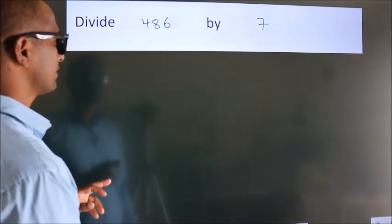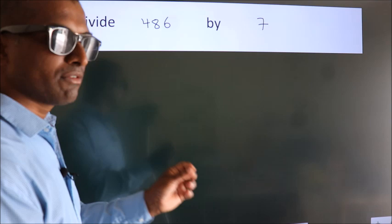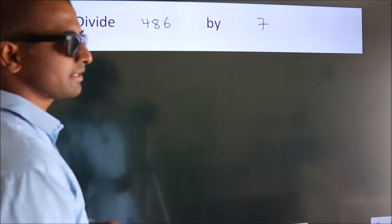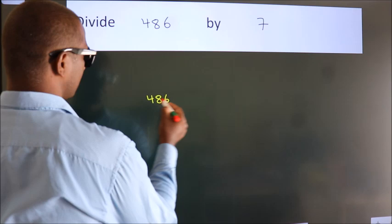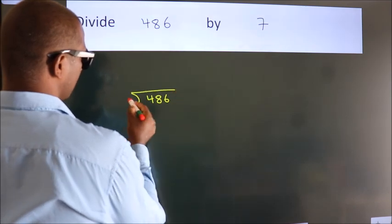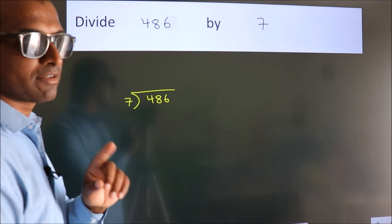Divide 486 by 7. To do this division, we should frame it in this way. 486 here, 7 here. This is your step 1.